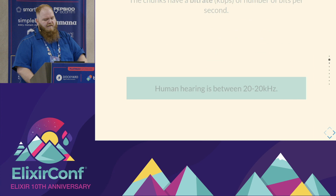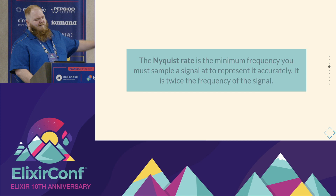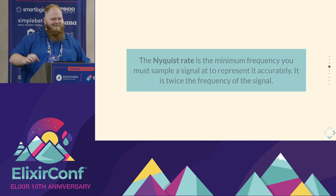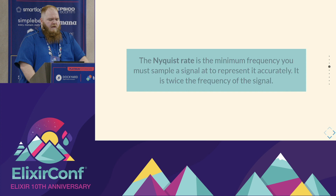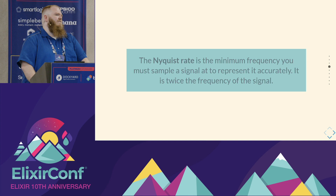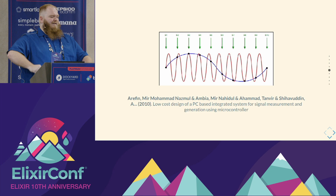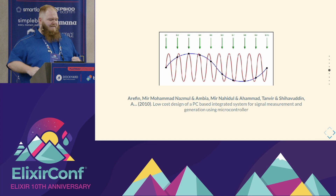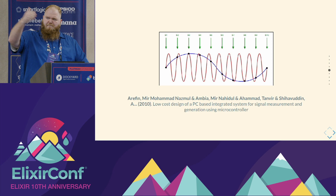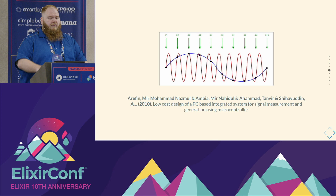Human hearing is between 20 Hz and 20 kilohertz. We have the Nyquist rate — you're going to learn a little bit of digital signal processing today. This is the minimum frequency you must sample a signal at to represent it accurately, which is twice the frequency of the signal. So for a 1 kHz sine wave, I need 2 kHz of samples. If you don't have that, you get aliasing — where you reconstruct a signal that is much slower or higher pitched than what you're looking for.